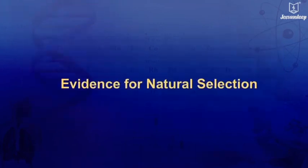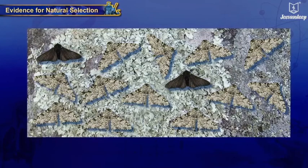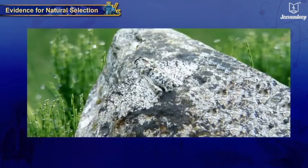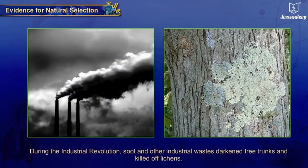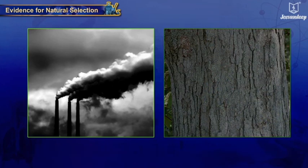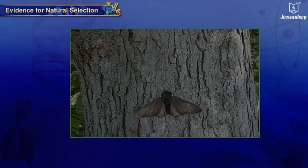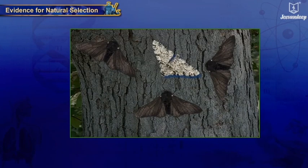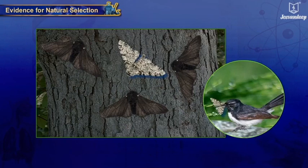Evidence for Natural Selection: The light-colored form of peppered moths were more predominant than the black ones in England before the Industrial Revolution, as they were well camouflaged with the lichens on tree trunks. During the Industrial Revolution, soot and other industrial wastes darkened tree trunks and killed off lichens. This enabled the black moths living in cities to be well camouflaged, so they could live long enough to reproduce and become abundant, while the light-colored moths were eaten by predators.